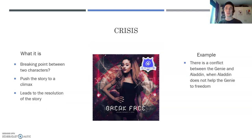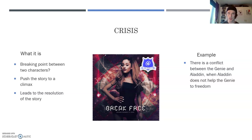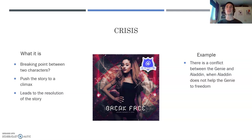Moving on to crisis. What is a crisis? Basically, it could be a breaking point between two characters, something used to push a story to a climax, and it usually leads to the resolution. As an example, there's a conflict between the Genie and Aladdin when Aladdin does not help the Genie to freedom because of his own greed — he wants to keep his wishes for himself. He uses the first and second wishes to get rich, famous, and get the girl. He's supposed to use the third wish to free the Genie, but instead he tells the Genie, 'I'm keeping you around.' That's the crisis.